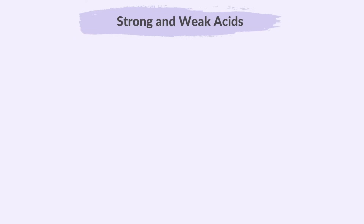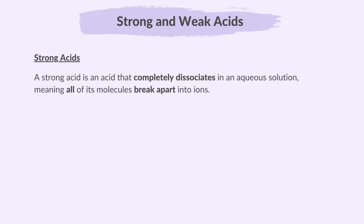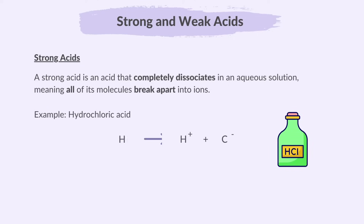A strong acid is an acid that completely dissociates in an aqueous solution, meaning all of its molecules break apart into ions. Hydrochloric acid is a strong acid, as shown by its symbol equation — its ions are completely broken down in aqueous solution, indicated by the single arrow.